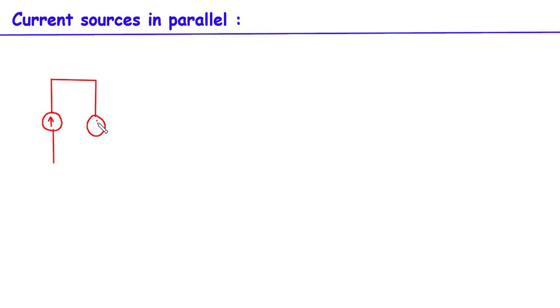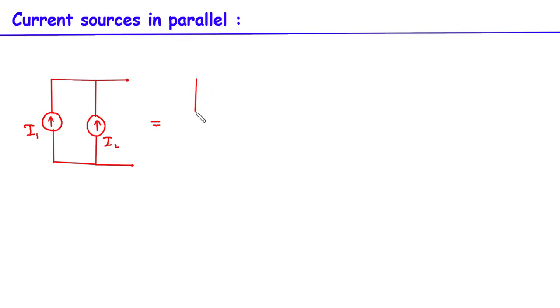Current sources in parallel. Let's say we have a current source in this direction and one more current source in the same direction. Now its resultant — let's say this is current I1 and this is current I2. Since both the current source directions are the same, that is in the upward direction, its equivalent current source will be I1 plus I2. Since both the current sources are in the same direction, we have to add them.